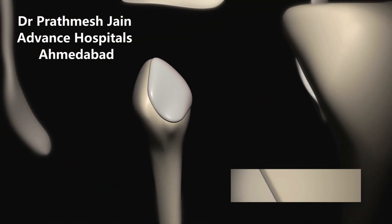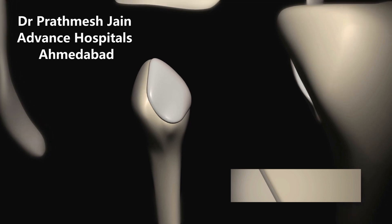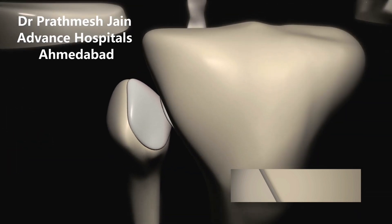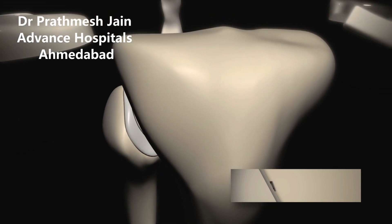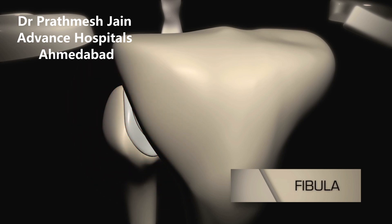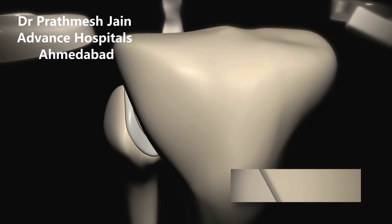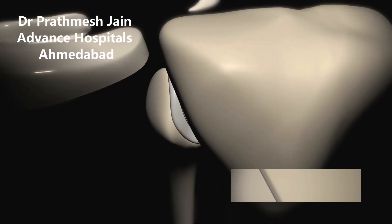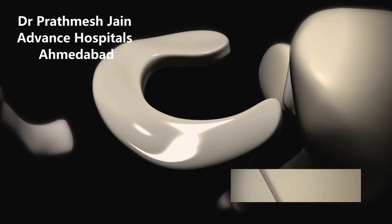Now there is another bone which is a smaller bone and this bone is called the fibula. This bone is on the side of the tibia and it bears only 10 to 20 percent of the load and is not very important in the knee joint per se. Hence even if it is fractured, we are not very worried.